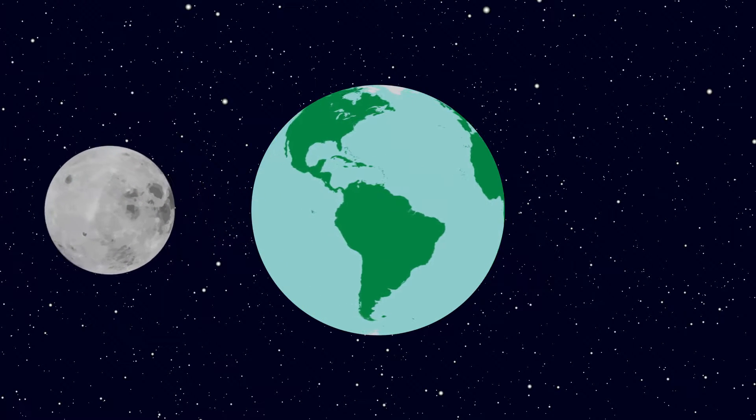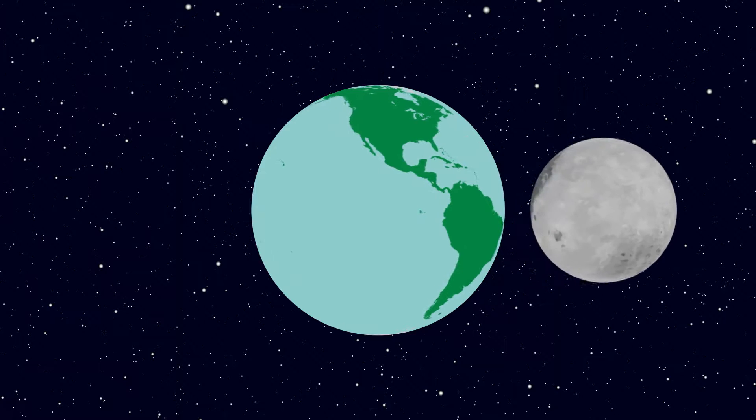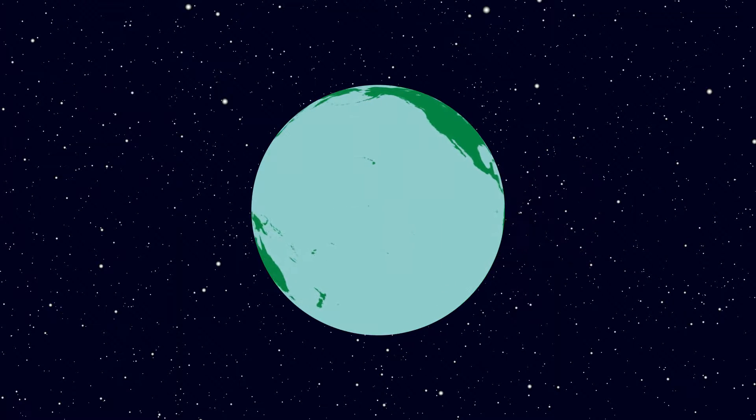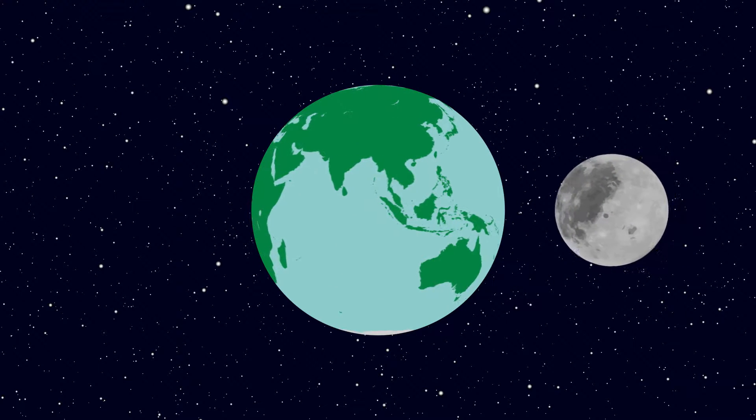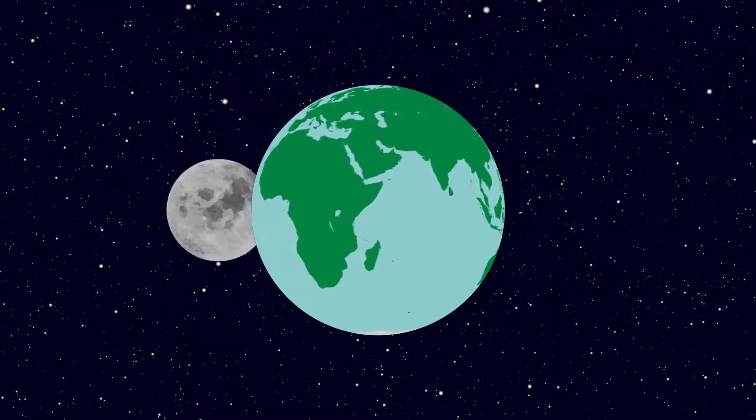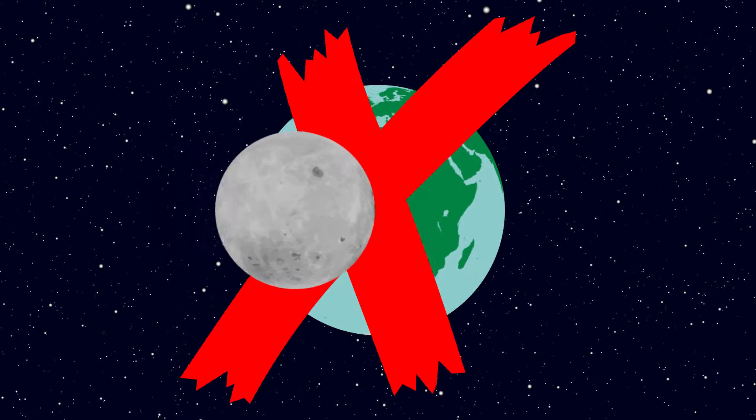You've all probably seen something like this, maybe even in my video on the phases of the moon. You've got a really tidy image of the moon orbiting the Earth, and everything is just happily lined up perfectly. But the Earth and the moon don't look like this. So what do they look like?